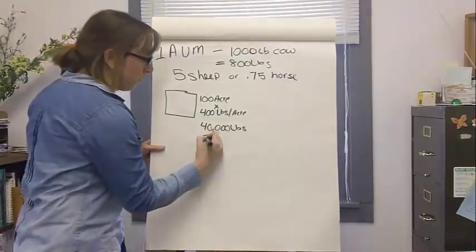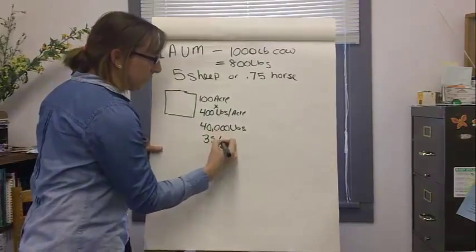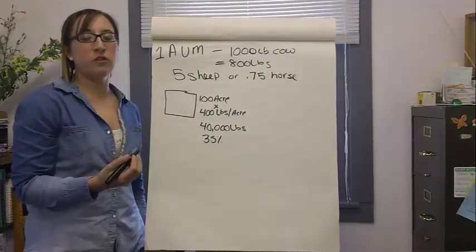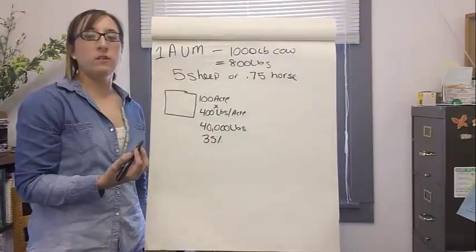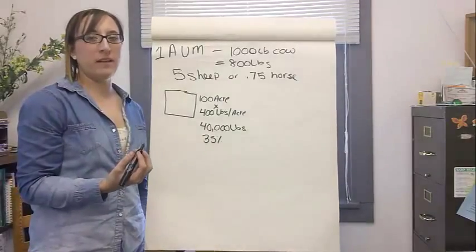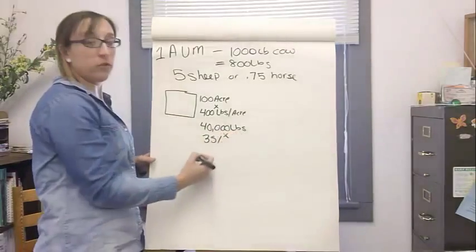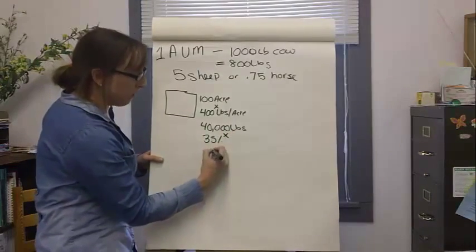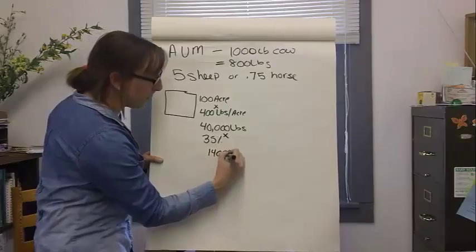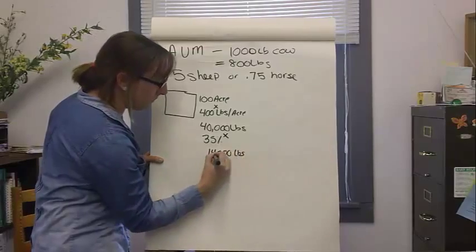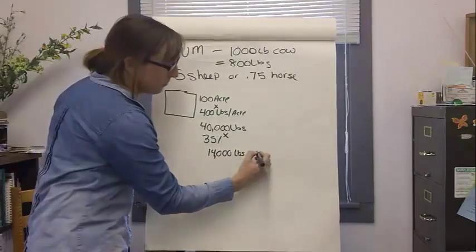Remember that we are only going to use 35% of this for grazing livestock. The other percentages will be used towards grazing wildlife and for plant health. If we take 40,000 pounds times 35%, we get 14,000 pounds. This is our forage supply.